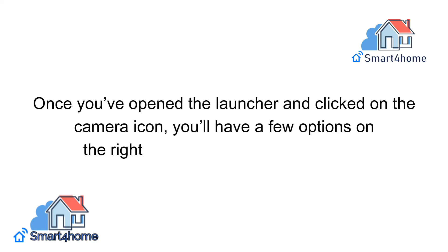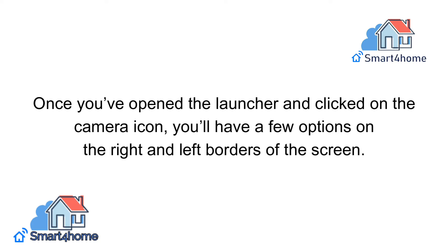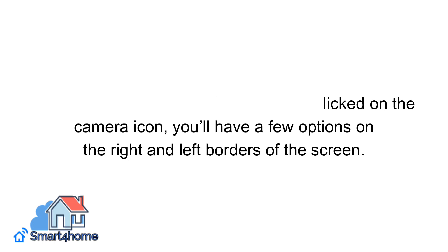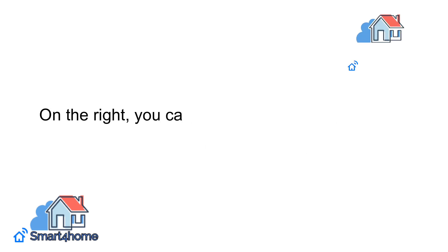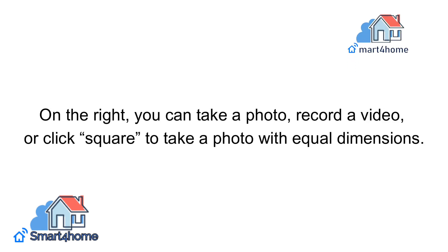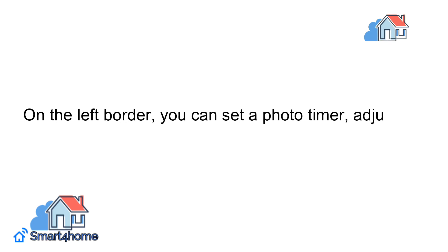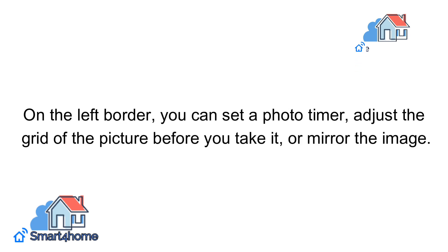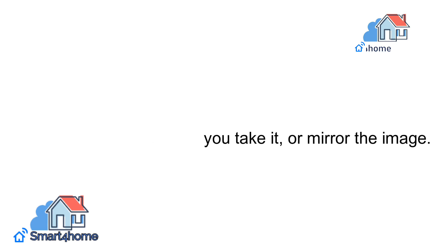Once you've opened the launcher and clicked on the camera icon, you'll have a few options on the right and left borders of the screen. On the right, you can take a photo, record a video, or click square to take a photo with equal dimensions. On the left border, you can set a photo timer, adjust the grid of the picture before you take it, or mirror the image.